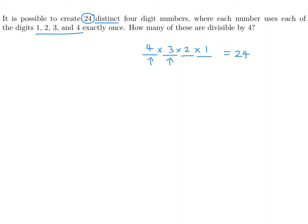So what are they asking? How many of those 24 numbers are divisible by 4? Let's write down the multiples of 4: 4, 8, 12, 16, 20, 24, 28, 32, 36, 40, and so on. As you can see, there's a pattern here: 4, 8, 2, 6, 0, right? That pattern 4, 8, 2, 6, 0. If you just look at the unit's digit, the last digit.